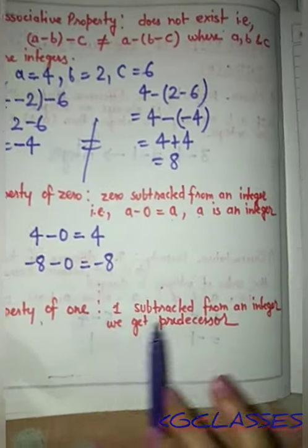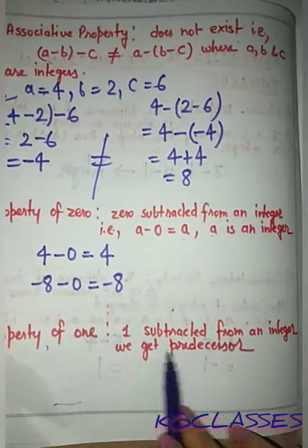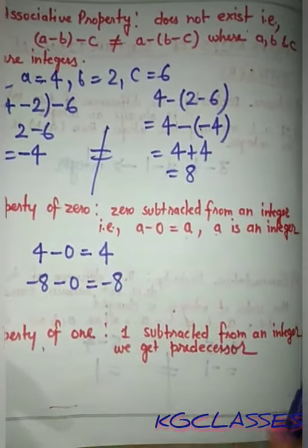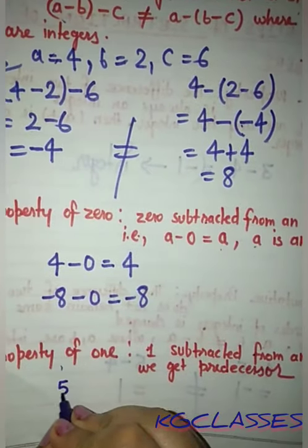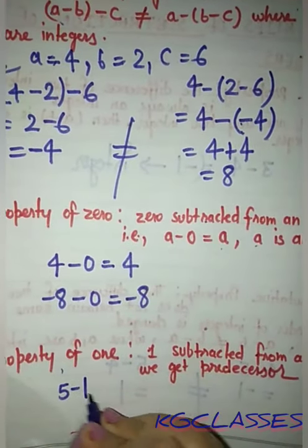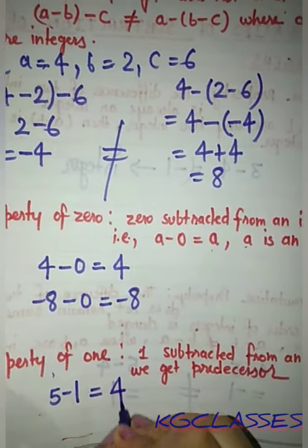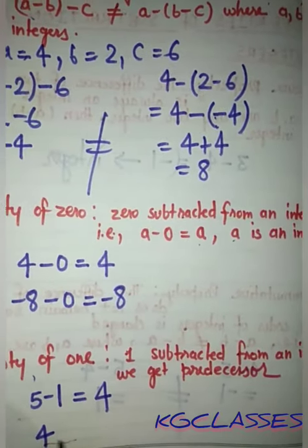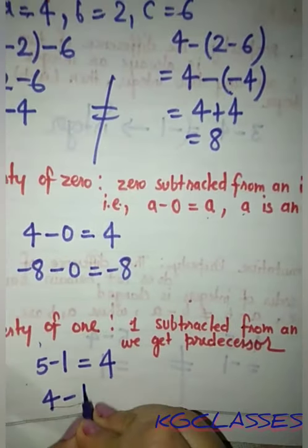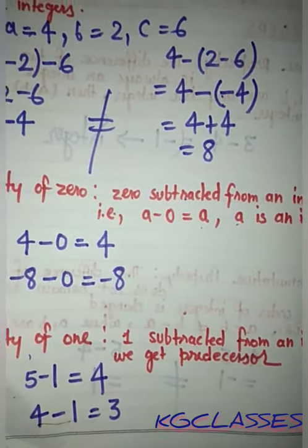The next property is the property of 1. If 1 is subtracted from an integer, we get the predecessor of that integer. That is, a minus 1 gives the predecessor. For example, if we have 4 and subtract 1, we get 3.